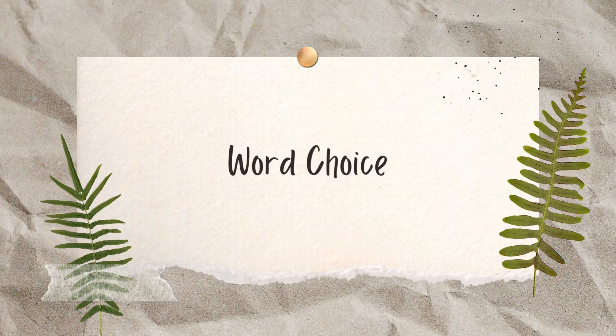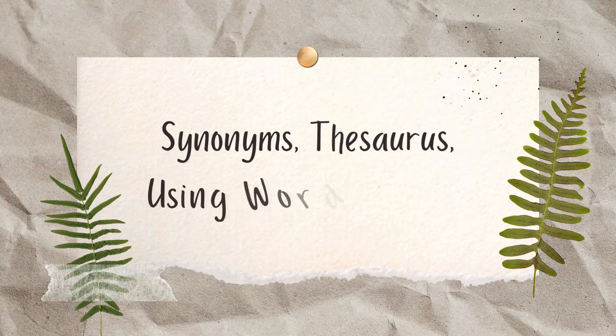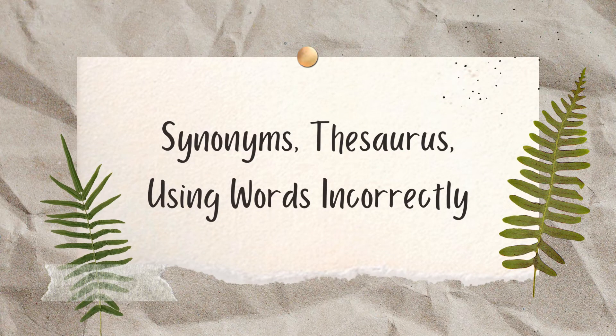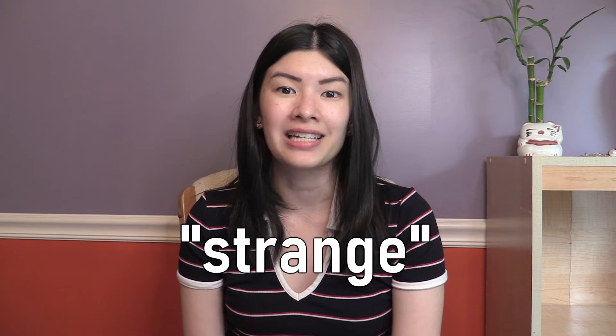Another way to improve your college app essays would be through word choice. You might be switching out words to avoid repetition — instead of using 'I planned' back to back, you switch one out for a synonym. But when you use synonyms or the thesaurus, you need to be careful, because you might actually be using that word incorrectly. The word you pick might have a different connotation from the original. For example, the word 'strange' has a negative connotation. If you're describing a trip and call the food 'strange,' that comes across negative because 'strange' usually carries feelings of weirdness or othering something.